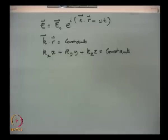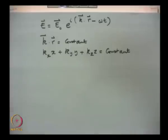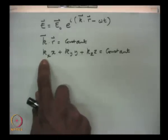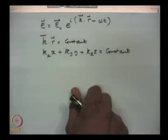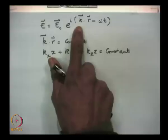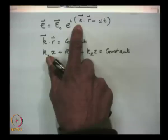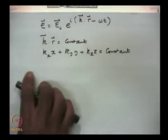This means k_x·x + k_y·y + k_z·z = constant, which is an equation of a plane. The orientation of that plane is perpendicular to the vector defined by (k_x, k_y, k_z). The surface of constant phase is a plane, and that plane is perpendicular to the k vector. The k vector represents the direction of propagation of the wavefront.